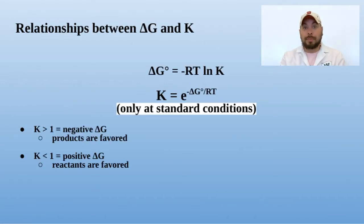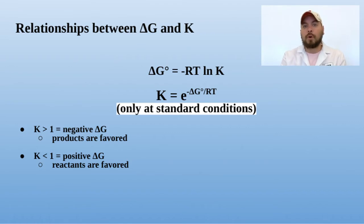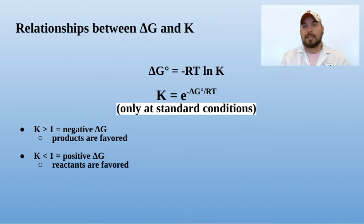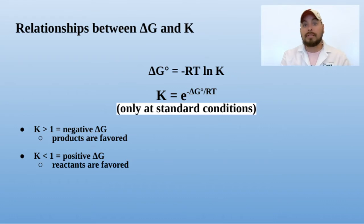Let's start by looking at the relationship between delta G and K. One note here is that the delta G with a degree sign specifically tells us that that is only valid at standard conditions. So this equation, delta G° equals negative RT natural log of K, is only good at standard conditions. That's an important thing to remember. So at standard conditions, if the K value is greater than one, it leads to a negative delta G. At standard conditions, if the K value is less than one, that leads to a positive delta G.